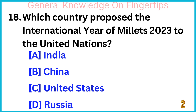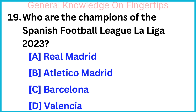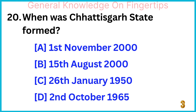Who are the champions of the Spanish Football League La Liga 2023? Barcelona. When was Chhattisgarh state formed? 1st November 2000.